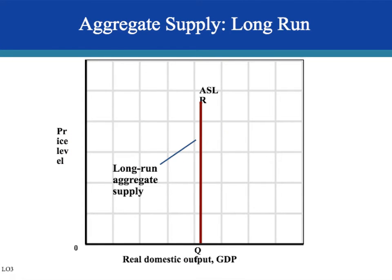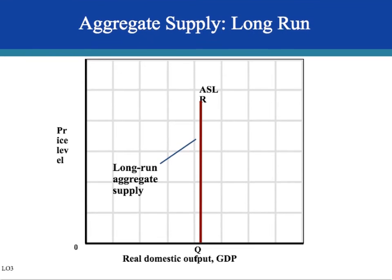In the long run, aggregate supply is vertical — a change in price does not affect output. The economy will always be at its full employment GDP. Both input prices and output prices are flexible, so profit levels adjust so firms produce the right amount of output at full employment GDP. Price changes do not affect output in the long run; we'll be at full employment output whether at a higher or lower price level.